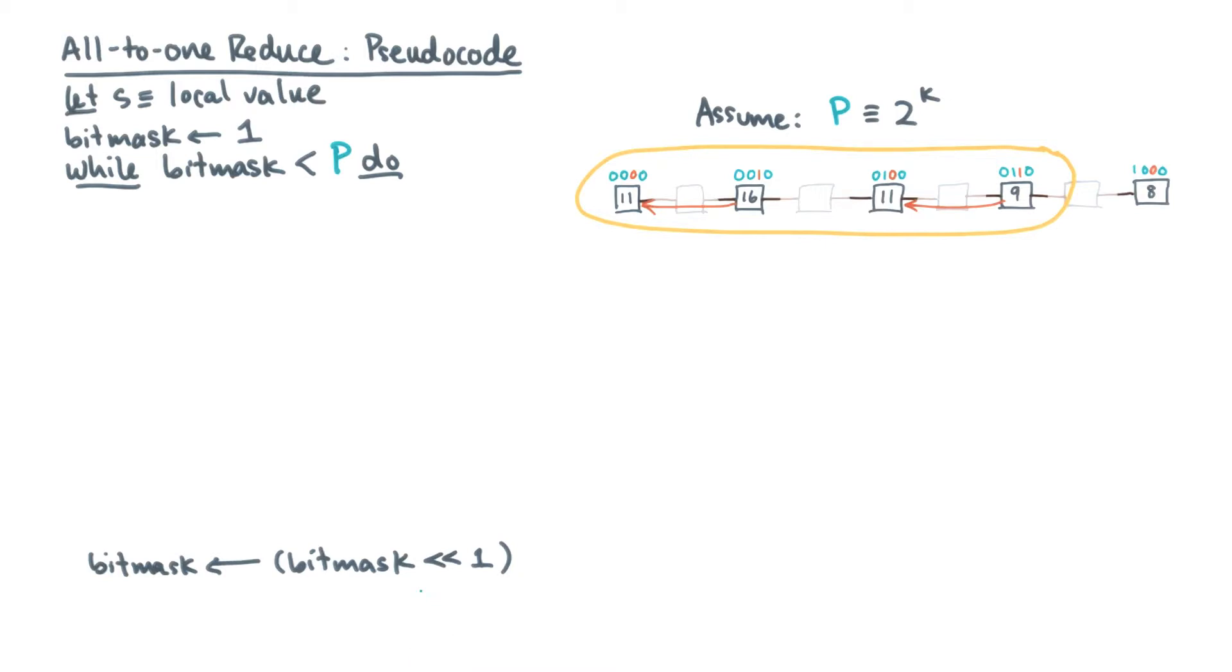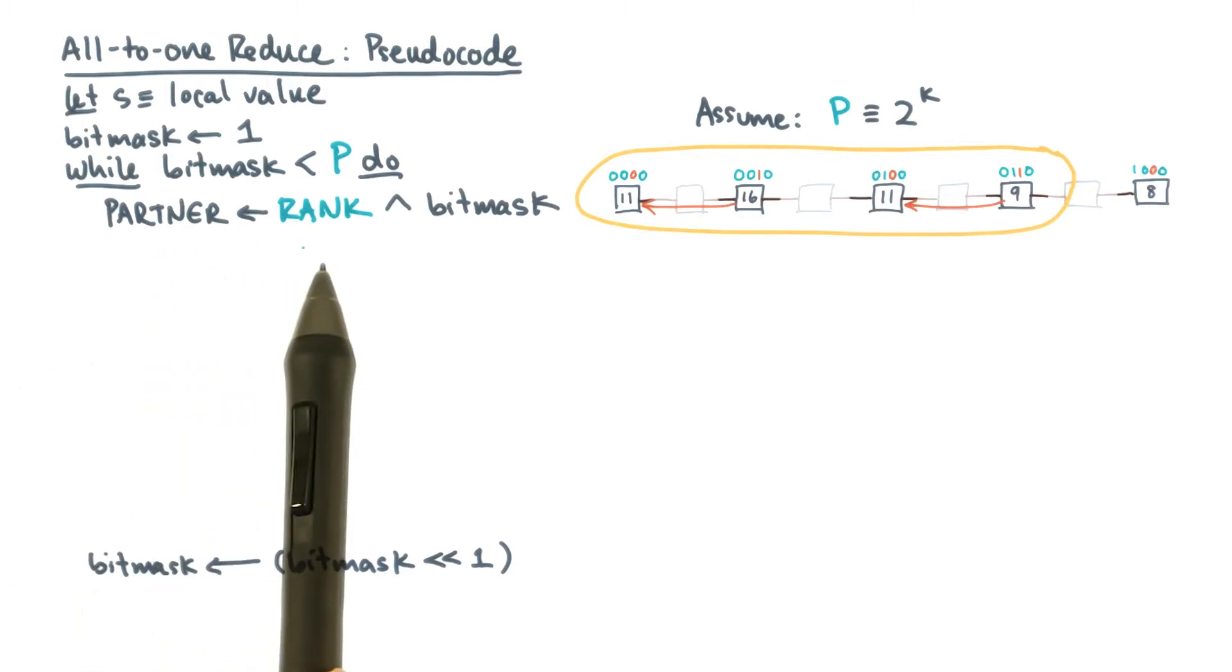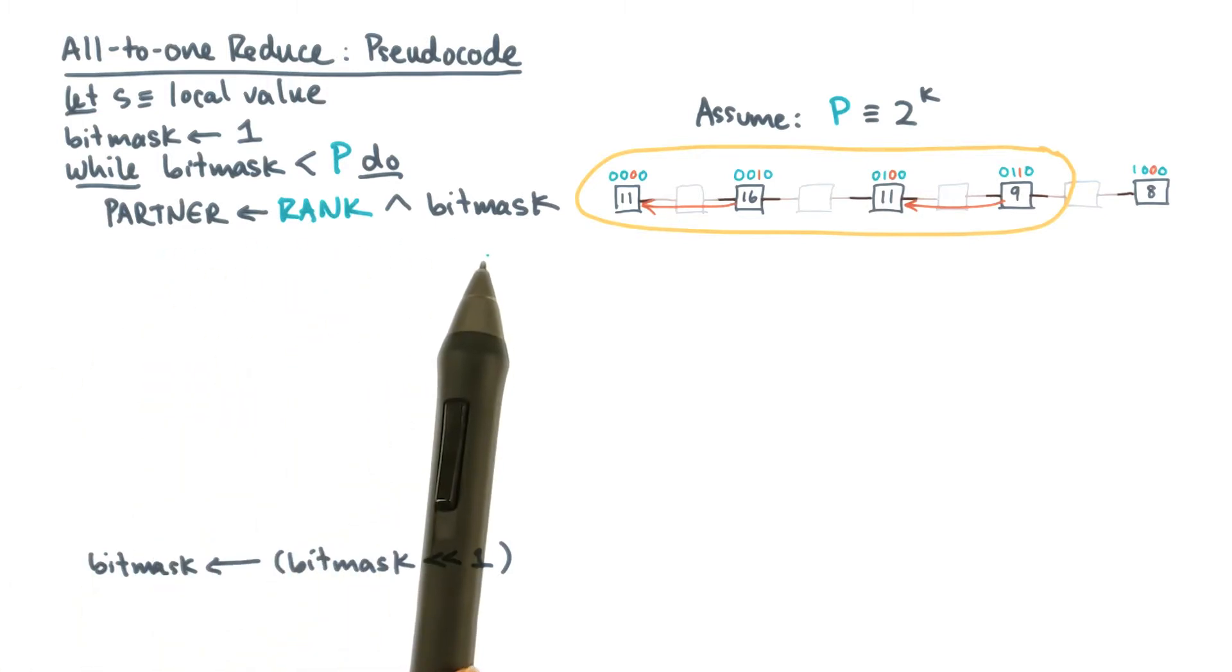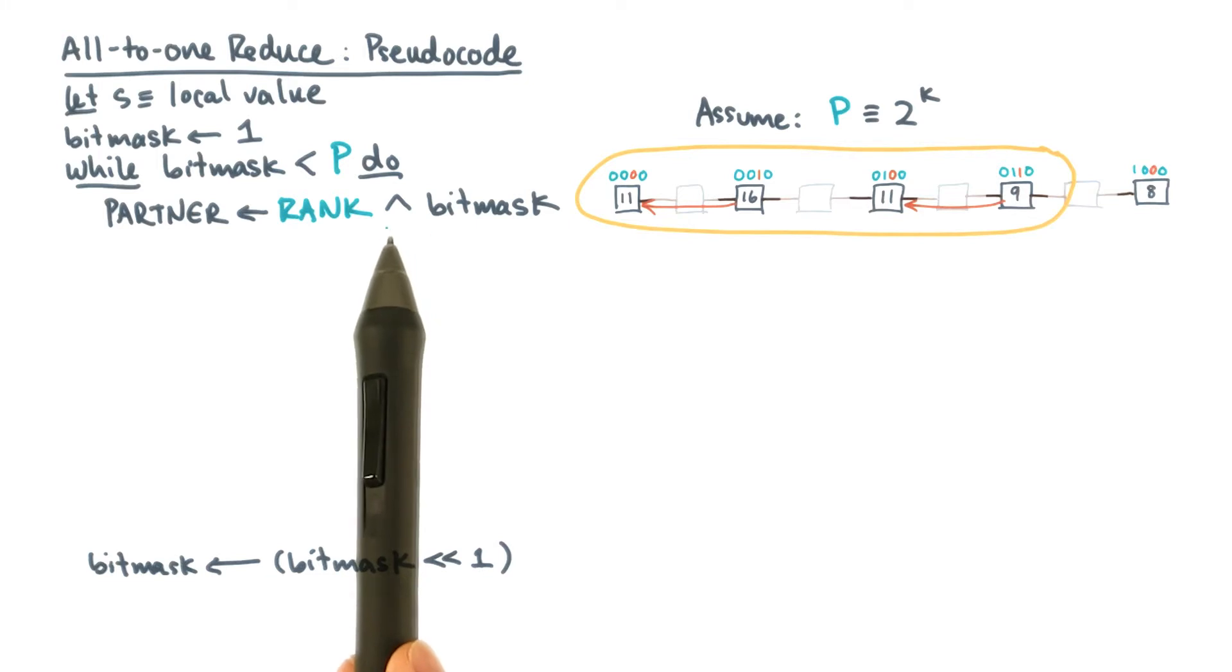The next part of the algorithm is to have pairs of processes communicate. The partner of any given rank differs only in the bit mask position. So this is an exclusive OR.